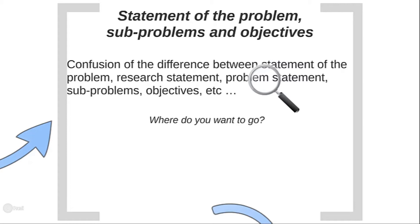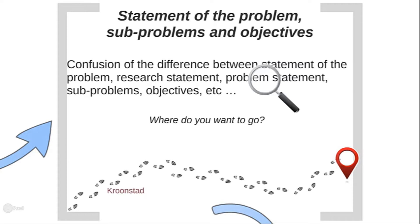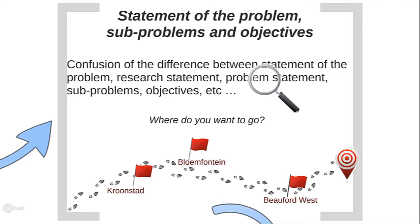If I asked you where you want to go on holiday and you said 'I want to go to Cape Town,' that would be your general idea of where you want to end up — very like your problem statement. Between Joburg and Cape Town, there are a lot of steps: you might stop in Kroonstad, Bloemfontein, Beaufort West — in order to get to Cape Town. Although Cape Town is your target, there are smaller targets along the way that lead you to your main objective, and this is exactly how it works in research.